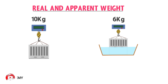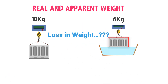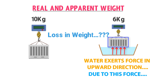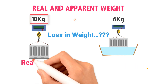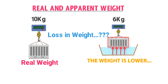Why is there a loss in weight when this object is immersed and held in the water tub? The answer is that water exerts a force on this object in the upward direction. Due to this upward force, the weight of this object appears smaller. The weight of this object in air is 10 kg force. This weight of 10 kg is known as the real weight.